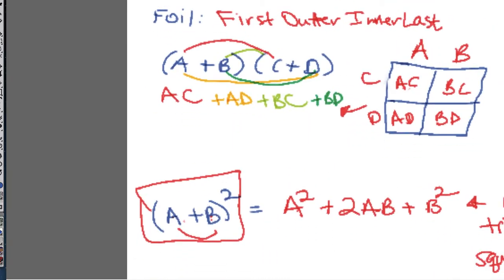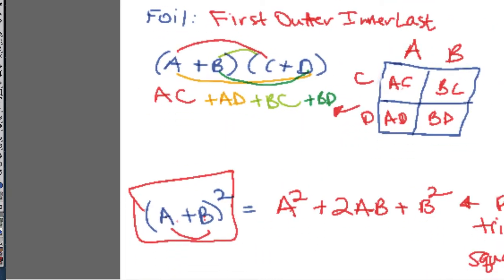If you've got a perfect trinomial square or something squared like that, it's always square of the first, square of the second, twice the product.